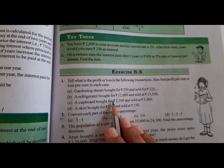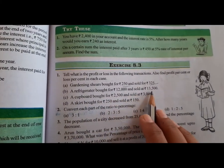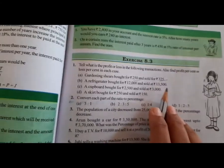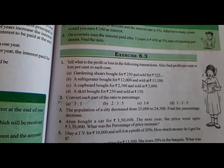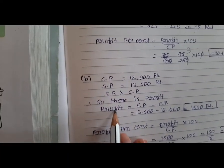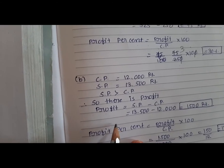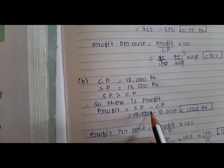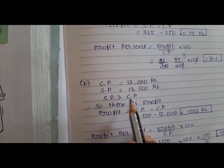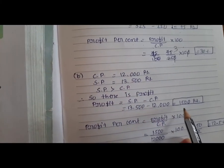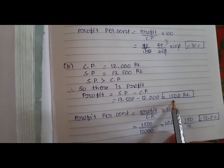A refrigerator bought for 12,000 and sold for 13,500. The selling price is more than the cost price, so there is profit. Profit equals selling price minus cost price: 13,500 minus 12,000 equals 1,500.